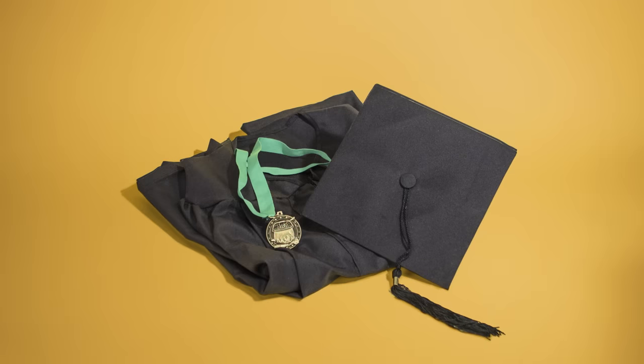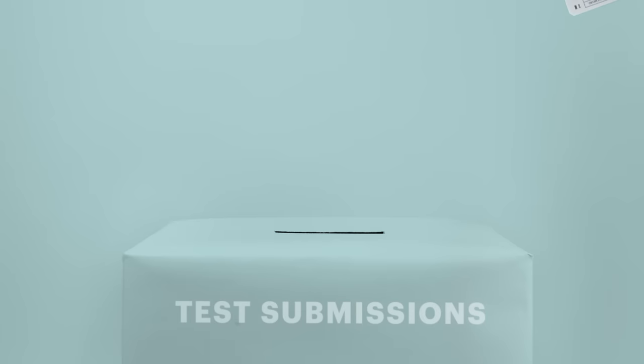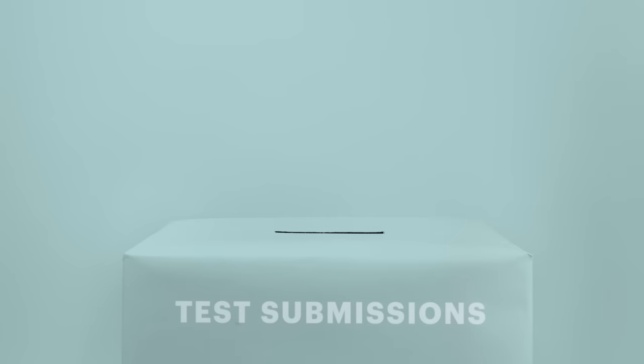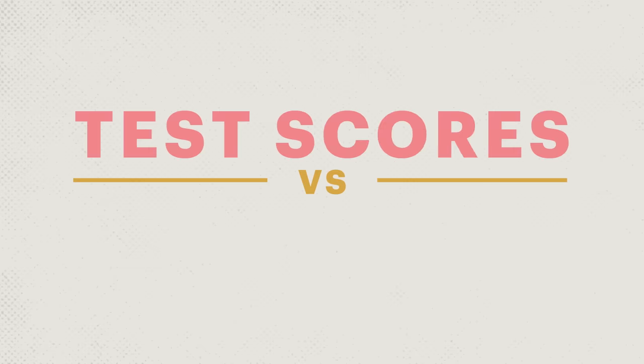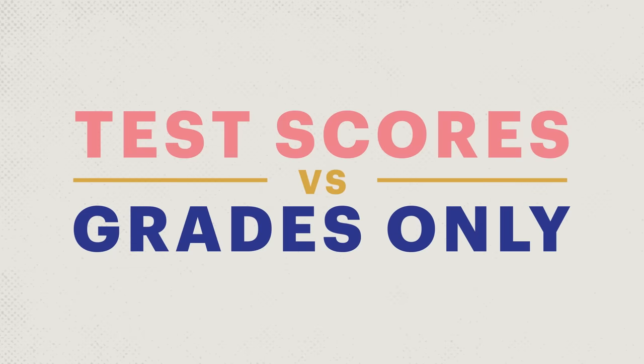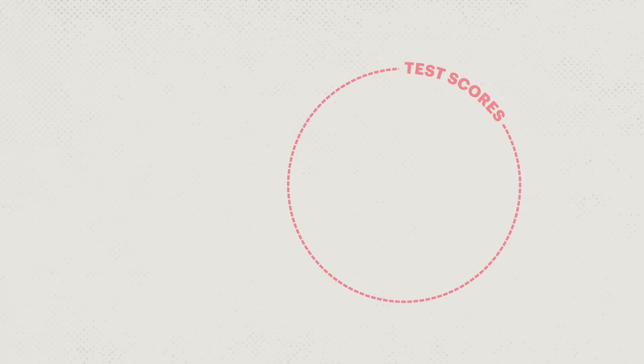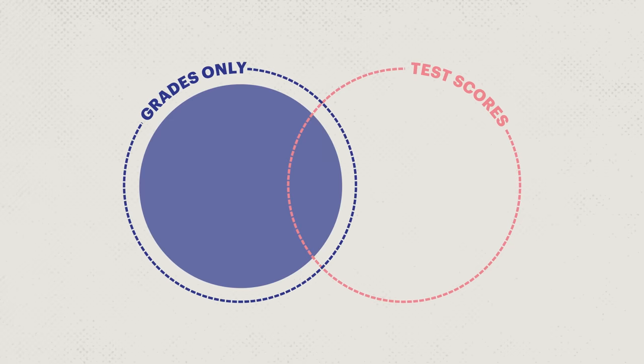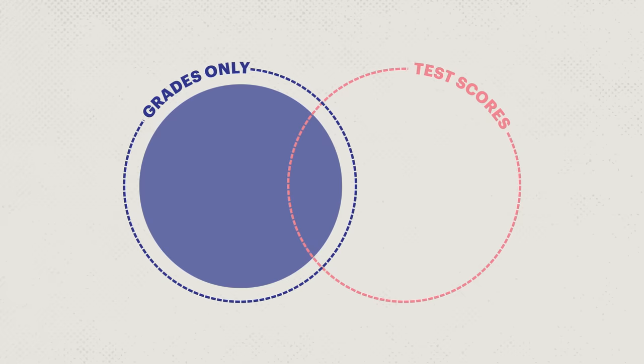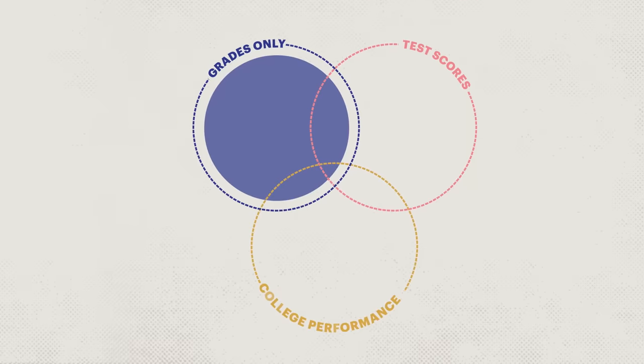A 2014 study followed more than 123,000 students who attended universities with test-optional admissions policies. The goal was to compare kids who submitted test scores to those who didn't. The researchers found that when it came to grades and graduation rates, the SAT and ACT test scores didn't correlate with how well a student performed in college.